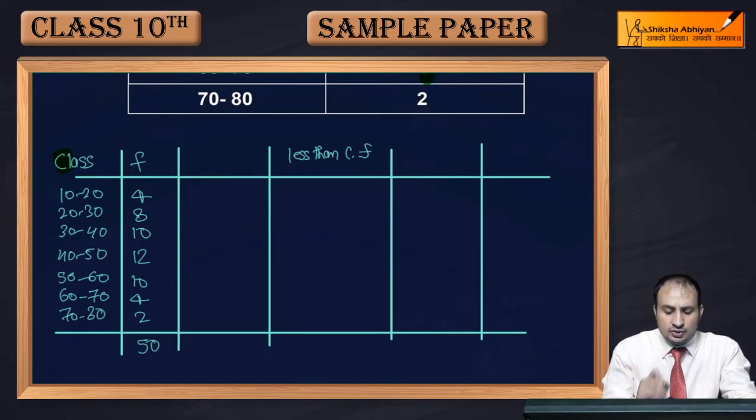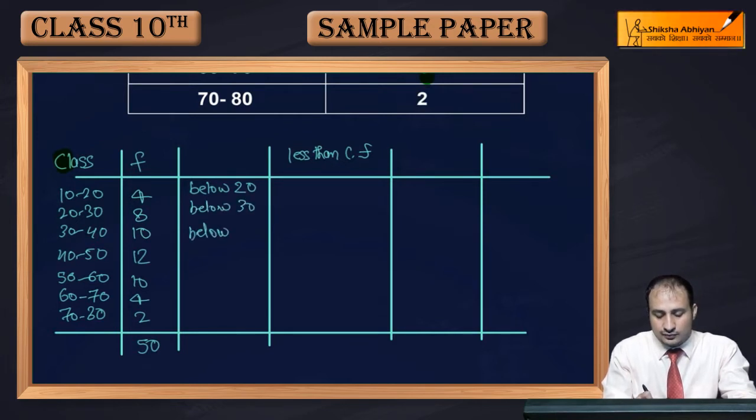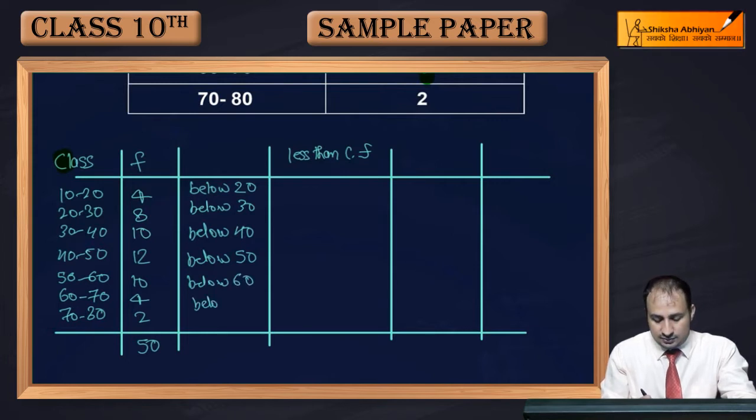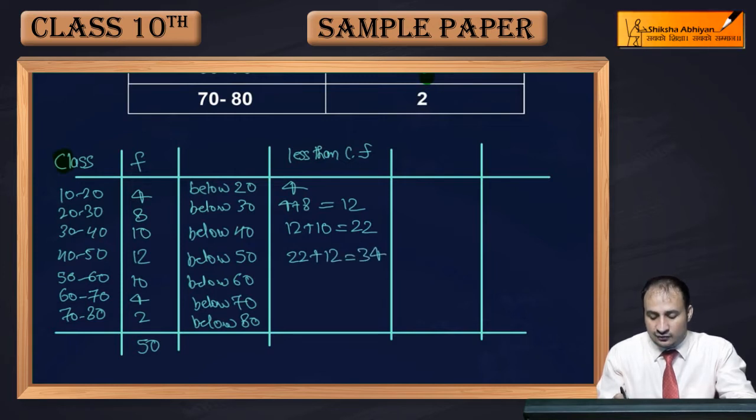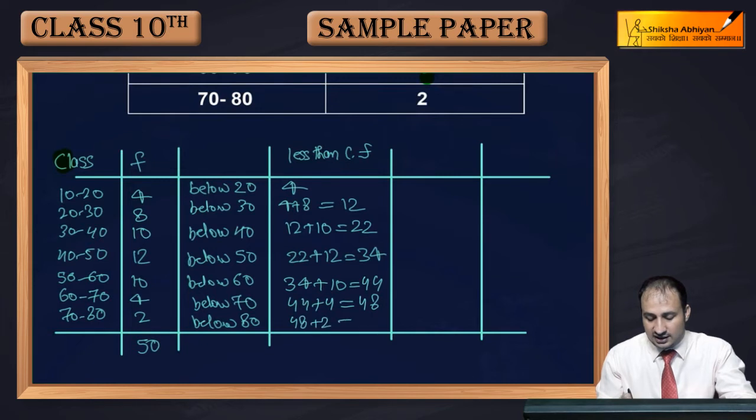So first of all, if I write here, below 20, below 20, after this below 30, then below 40, below 50, below 60, below 70, and below 80. For these, the frequencies will come. For below 20, frequency is 4. For 30, 4 plus 8, how much will be the frequency? It will be 12. Below 40, how much will come? 12 plus 10, that is equal to 22. Below 50, how much will come? 22 plus 12, that is equal to 34. Below 60, how much will come? 34 plus 10, that is equal to 44. And here, what will come? 44, add 4 to it, so 48. And here, 48, add 2 to it, so 50.